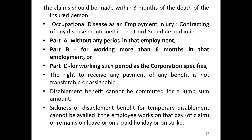The main ESI benefits are sickness, maternity, disablement, dependents', medical, and funeral. Claims should be made within three months of the date the insured person contracts an occupational disease as an employment injury. Diseases are listed in the Third Schedule: Part A without any minimum period of employment, Part B for working more than six months in the employment, and Part C for such period as the corporation specifies. The right to receive any benefit is not transferable or assignable, and disablement benefit cannot be commuted for a lump sum. Sickness or disablement benefit for temporary disablement cannot be availed if the employee works on that day, remains on leave, on a paid holiday, or on strike.